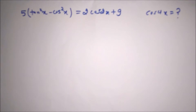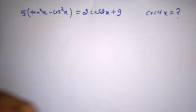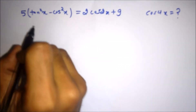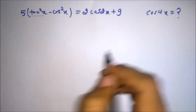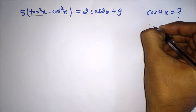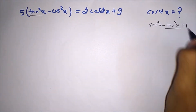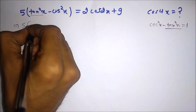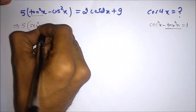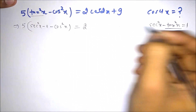Hello friends, this is one of the questions from JEE MAINS 2017. In this question, the equation 5(tan²x - cos²x) = 2cos2x + 9 is given and we want to find the value of cos4x. We will try to express tan²x in terms of cos. We know that sec²x - tan²x = 1, so we can write tan²x = sec²x - 1. Therefore we write 5(sec²x - 1) - cos²x = 2.